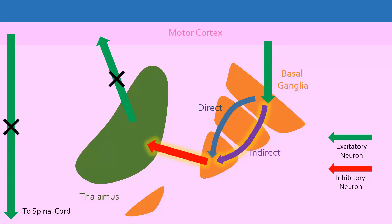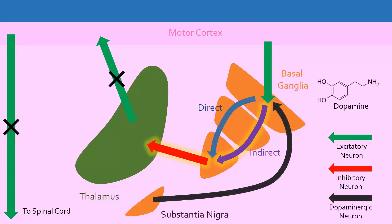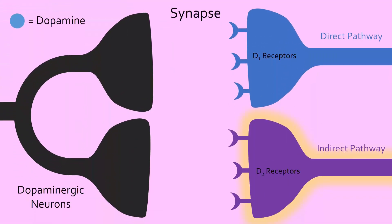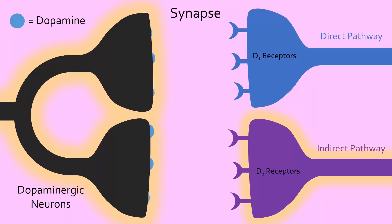The release of a neurotransmitter called dopamine by neurons originating from an area of the basal ganglia called the substantia nigra can both activate the direct pathway and inactivate the indirect pathway, initiating movement. This is because dopamine can bind to D1 receptors in the starting neuron of the direct pathway to activate it, as well as binding to D2 receptors in the starting neuron of the indirect pathway to inactivate it.